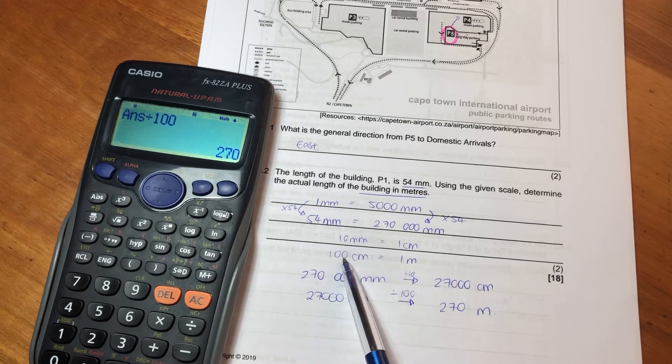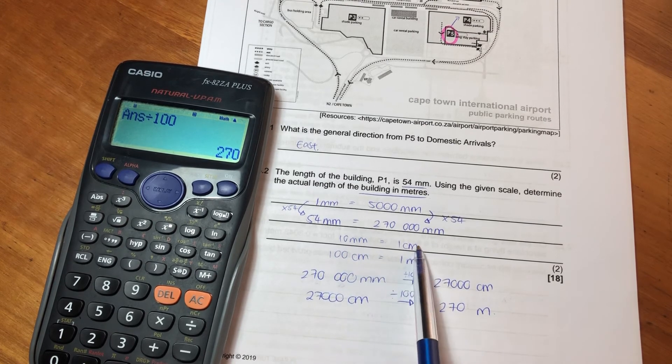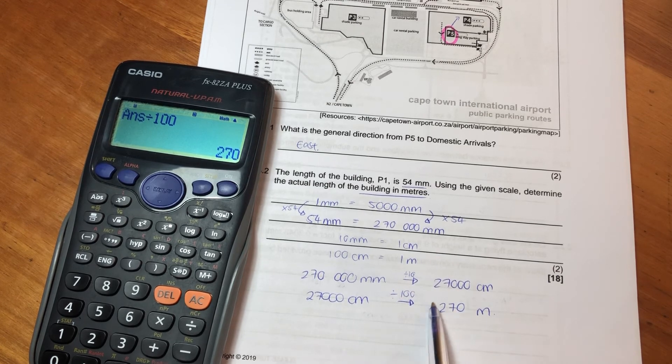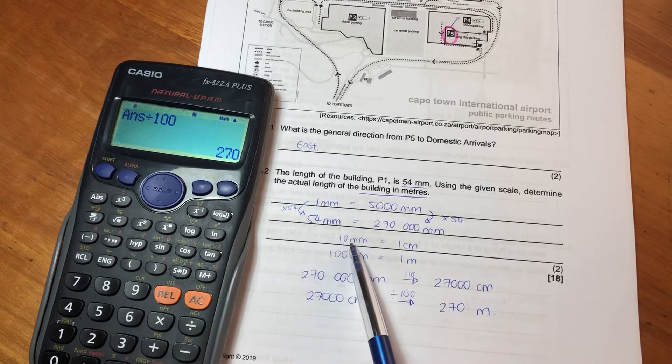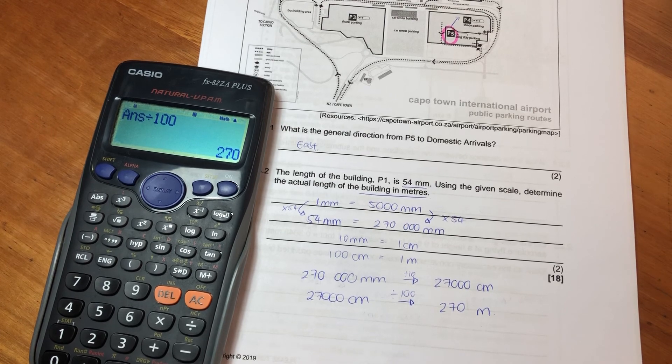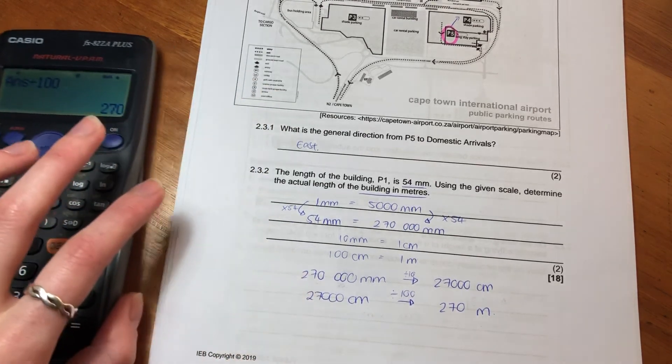Remember, when we're moving from a smaller measure to a larger measure, we always divide, because there will always be fewer meters than there are millimeters or centimeters, because meters is a larger form of measurement. So that's your final answer there. I hope that was helpful. We are now moving on to question three.